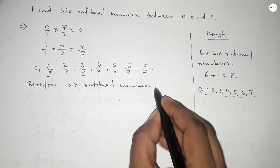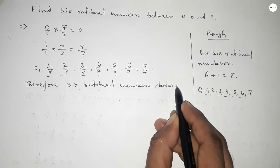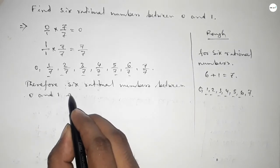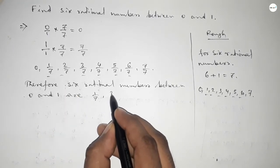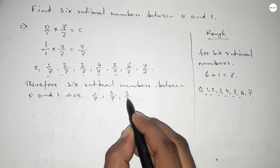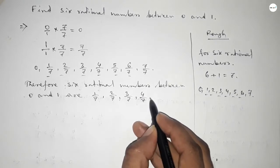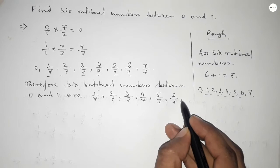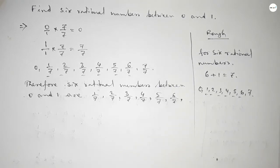Therefore, six rational numbers between 0 and 1 are: 1/7, 2/7, 3/7, 4/7, 5/7, and 6/7. That's all. This is the process to find six rational numbers between 0 and 1.